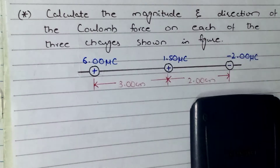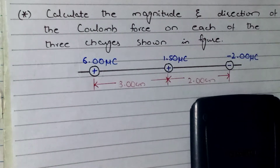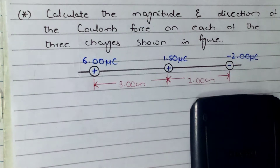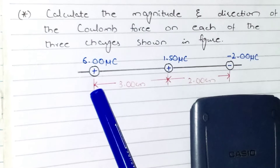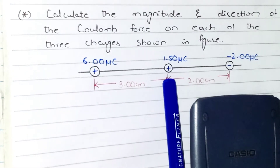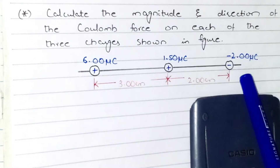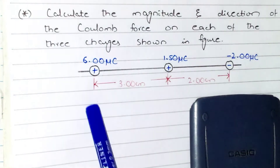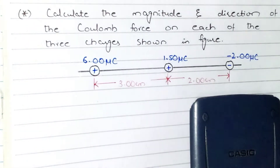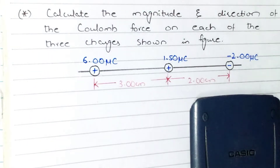The question for today is: calculate the magnitude and direction of the Coulomb force on each of the three charges shown in the figure. We are given three charges — 6 microcoulombs, 1.5 microcoulombs, and minus 2 microcoulombs — along with the distances between the charges, and we have to find out the magnitude and direction of the Coulomb force on each of these charges.